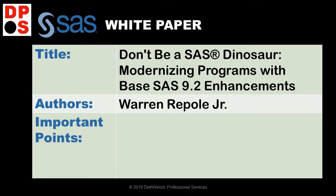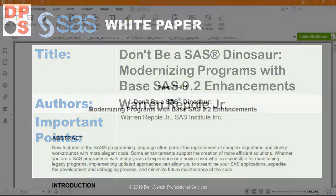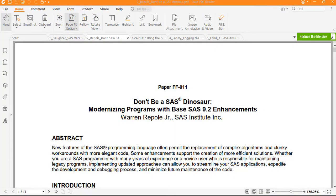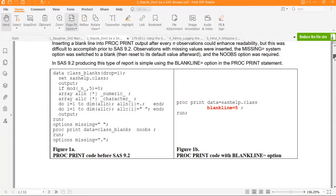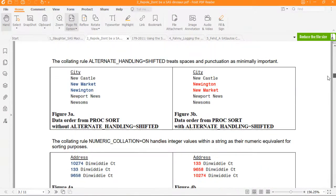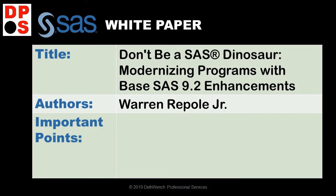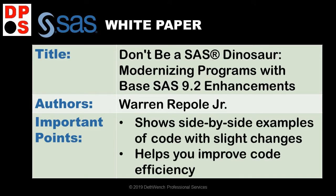The next white paper is Don't Be a SAS Dinosaur by Warren Repole Jr. It goes back in time and shows us different ways to do code in SAS to improve its efficiency. Warren is talking about modernizing programs with base SAS 9.2 enhancements, covering some functions that were new to SAS at the time but we can still use today. For example, he shows you what happens when you use the blank line option in proc print, so you can understand why that option was even built. It's a good way to really understand what some of the SAS code does, with side-by-side examples of code to improve efficiency.